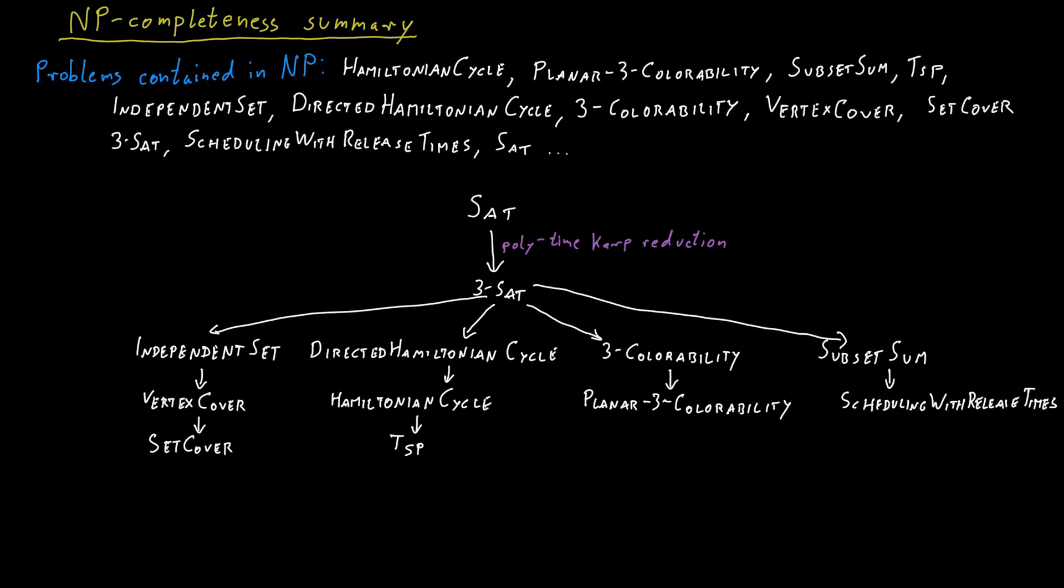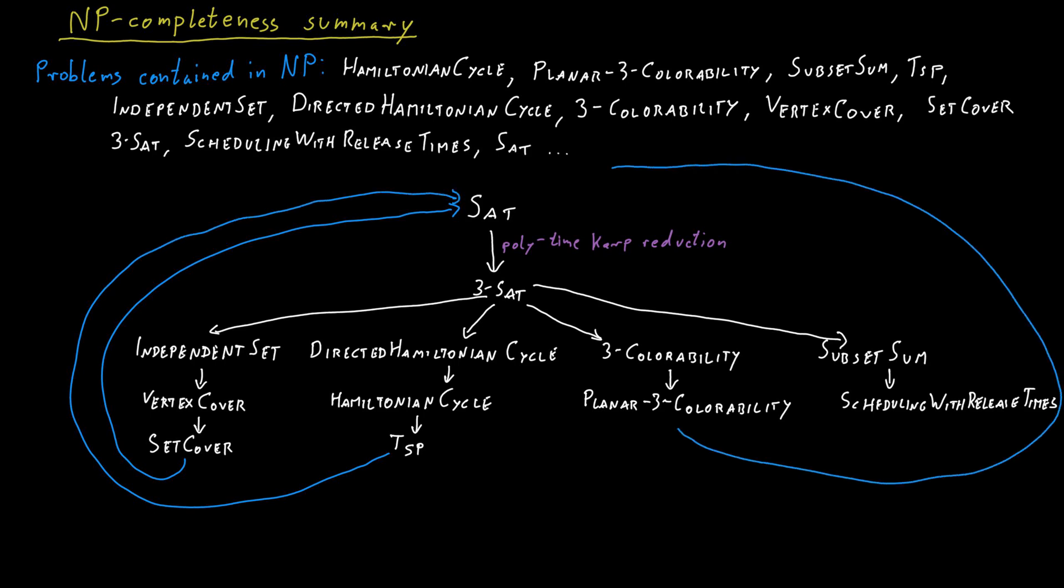So all of these problems are in NP, so all of them reduce to satisfiability. Set cover reduces to satisfiability. TSP reduces to satisfiability. Planar three-coloring reduces to satisfiability. And so on. All of them.